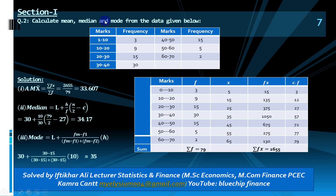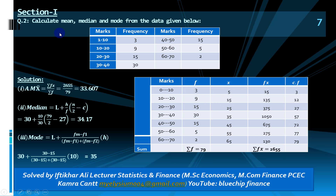For calculation of median, quartile, decile, and percentile, we need cumulative frequency. Take the first frequency, then add the next frequency to the previous total, and in this way calculate cumulative frequency. Mean equals sum of fx over sum of f — we need the product of f and x.